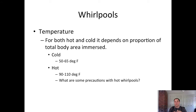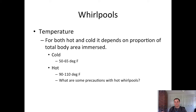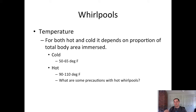Temperatures are very important in whirlpool therapy. A cold whirlpool should be set between 50 and 65 degrees Fahrenheit — 55 degrees is usually a good middle ground. A hot whirlpool should be set between 90 and 110 degrees Fahrenheit. These ranges are supported in the literature as necessary for therapeutic effects to occur. Precautions for hot whirlpools include patients susceptible to heat illness, and full-body immersion in a hot whirlpool is not recommended for young children.